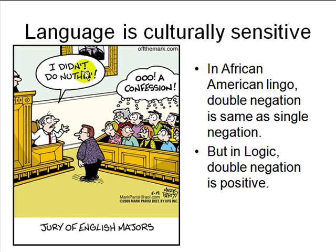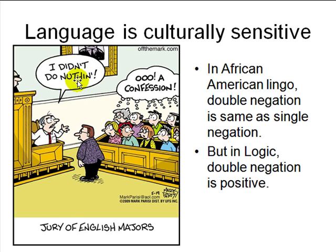Language is also culturally sensitive — what means one thing in one culture can mean the opposite in another. For example, in a cartoon of a jury of English majors, the defendant says 'I didn't do nothing.' Logically, 'didn't' is a negation and 'nothing' is a negation — two negatives make a positive, meaning he's confessing. But in African-American vernacular English, double negation functions the same as a single negation. In logic, however, double negation means a positive.